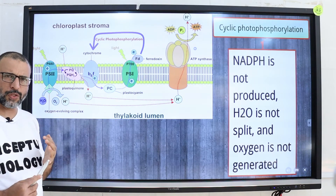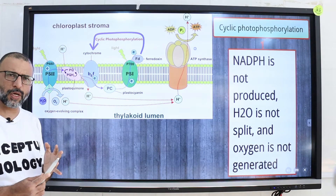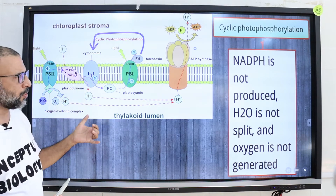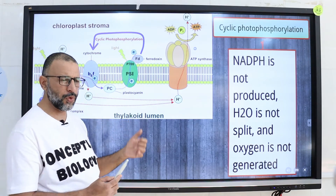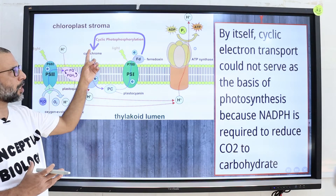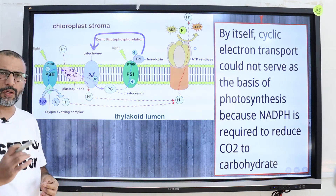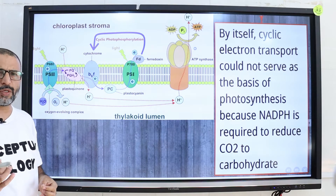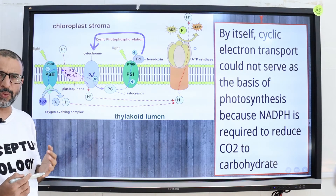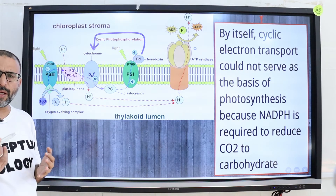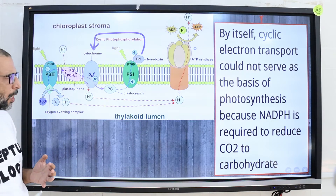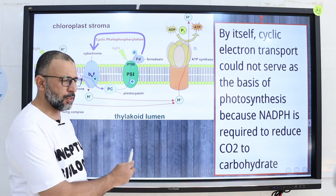NADPH is not produced, water is not split, and oxygen is not generated during cyclic photophosphorylation. Cyclic electron transport could not serve as the basis of photosynthesis because NADPH is not produced, and NADPH is required to reduce carbon dioxide to carbohydrates.